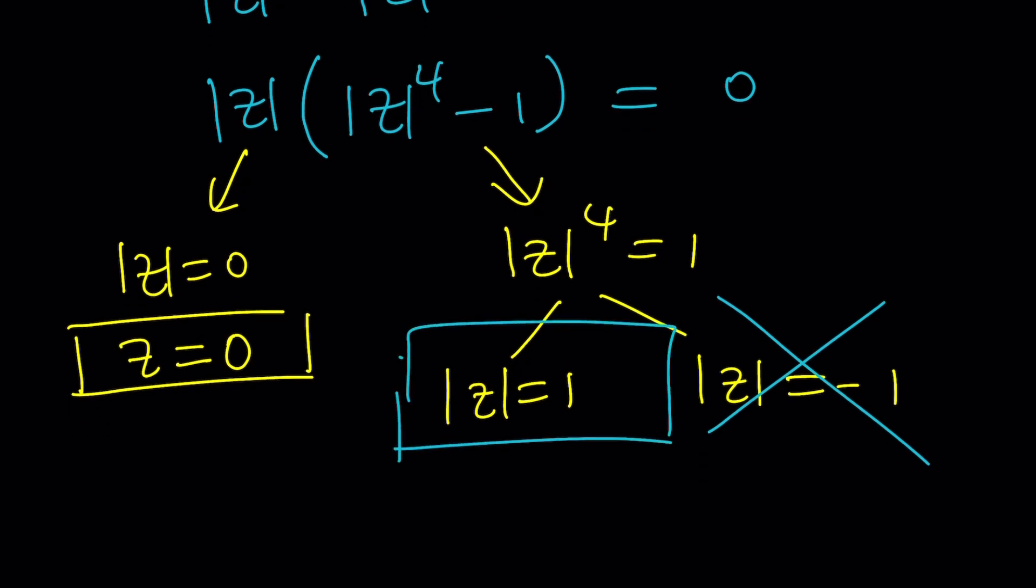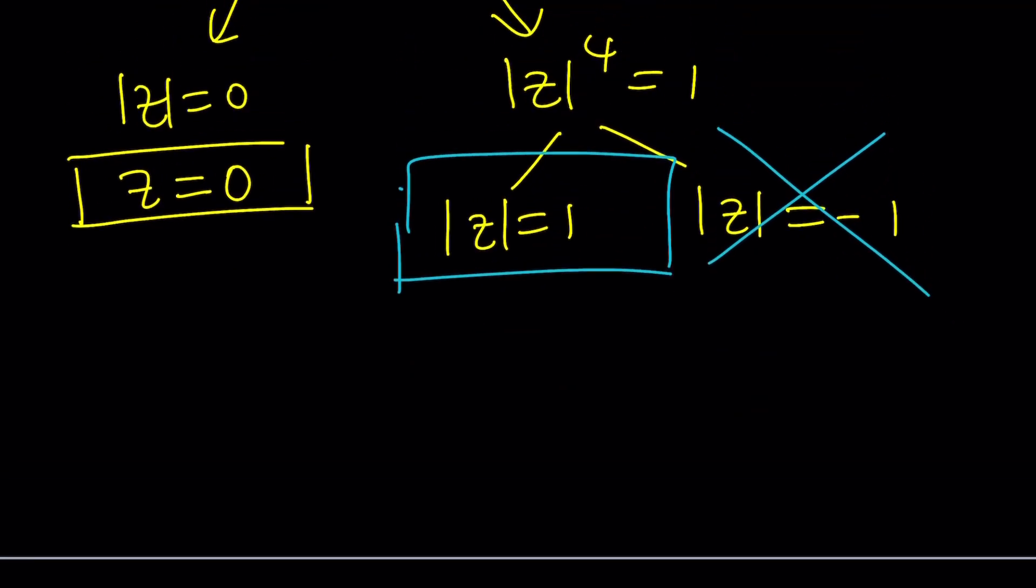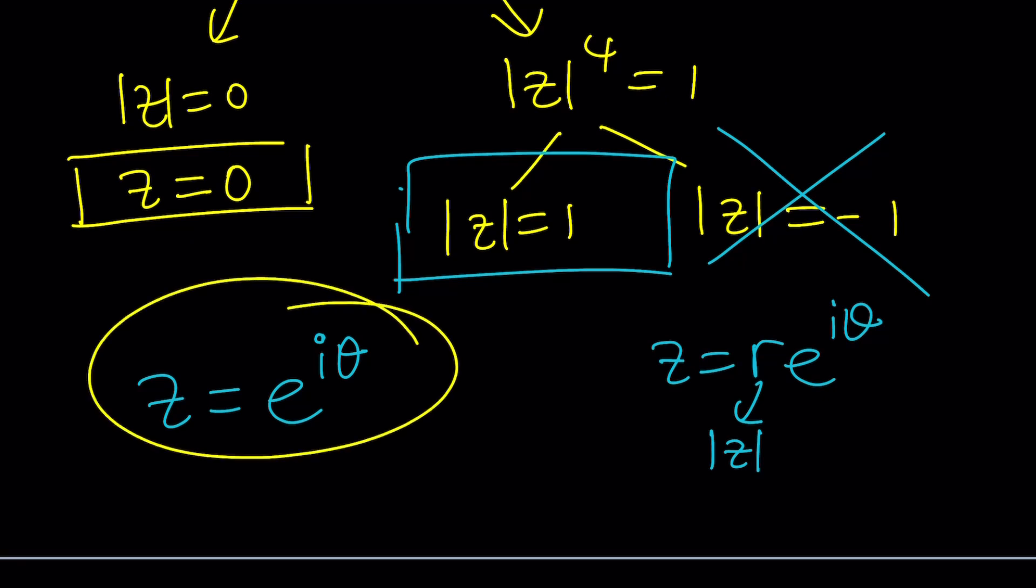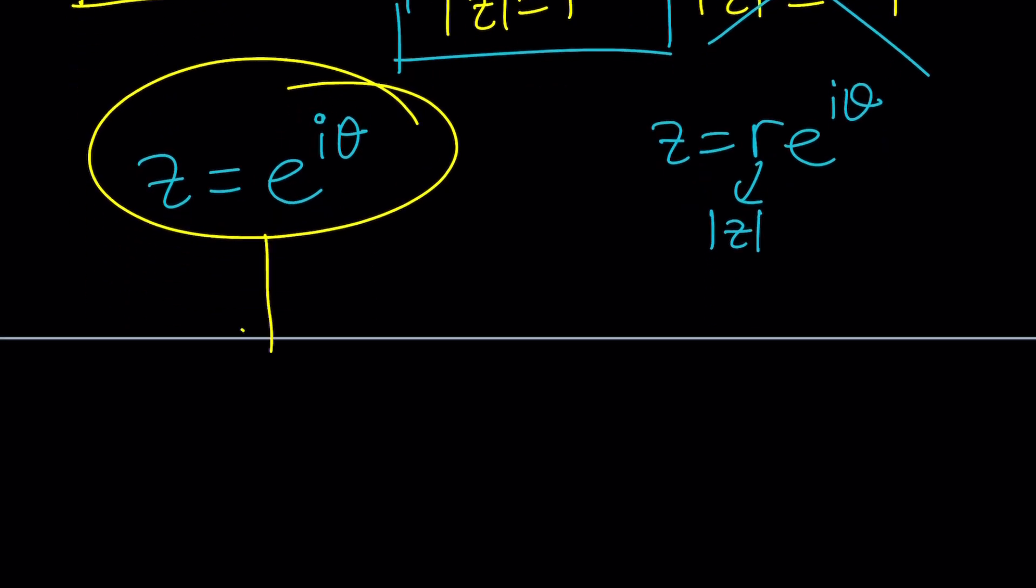What does that mean for the absolute value to be one? It means you can draw a unit circle, all points on the unit circle, so on and so forth. In other words, in the Eulerian world, in the polar form, it means z can be written as e to the i theta, which is awesome. By the way, in general, you can write a complex number as z equals r times e to the i theta, where r is the absolute value and theta is the argument. But when r is equal to one, or it may or may not be one in general case, but when r is equal to one, this is what you get. So you get a simpler form.